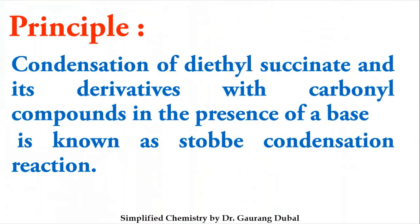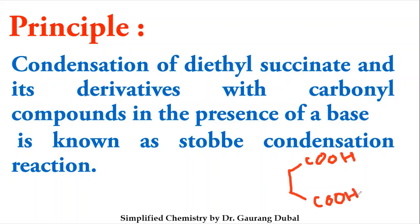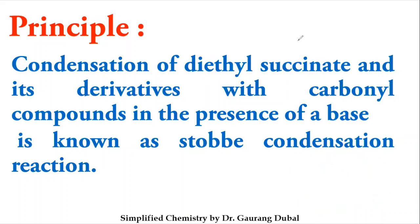The principle of the Stobbe condensation is: condensation of diethyl succinate and its derivatives. First you should know about succinic acid. Butane-1,4-dioic acid is known as succinic acid. If you take the diethyl ester of succinic acid — placing C₂H₅ groups — that is known as diethyl succinate. We can also take its derivatives.